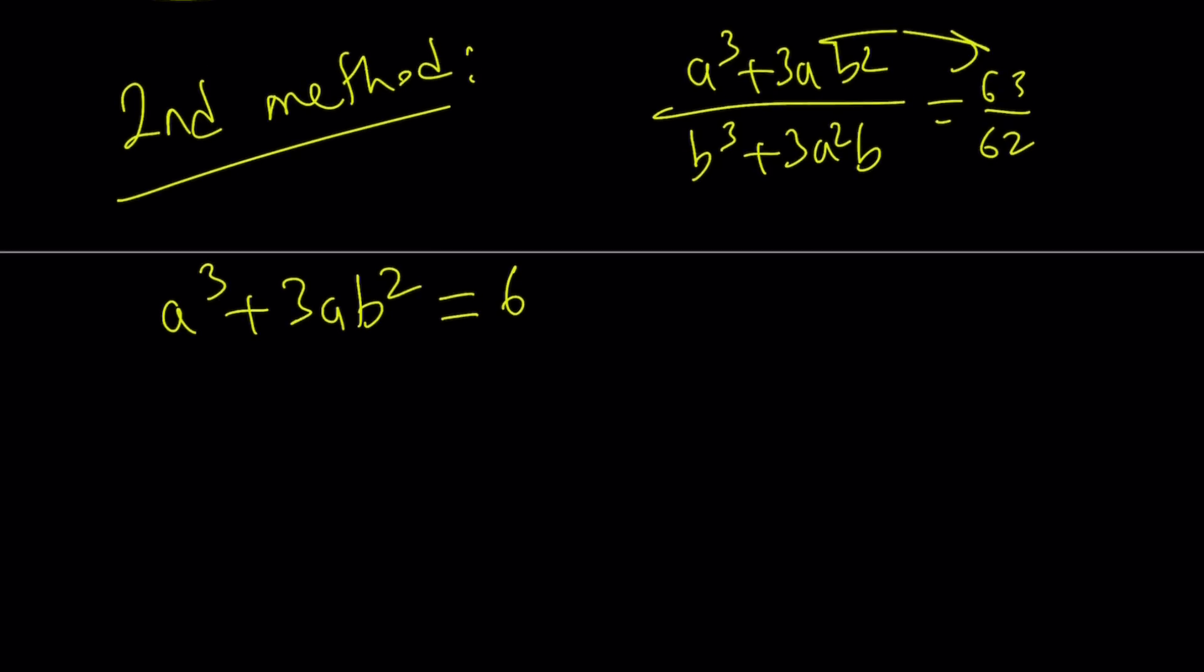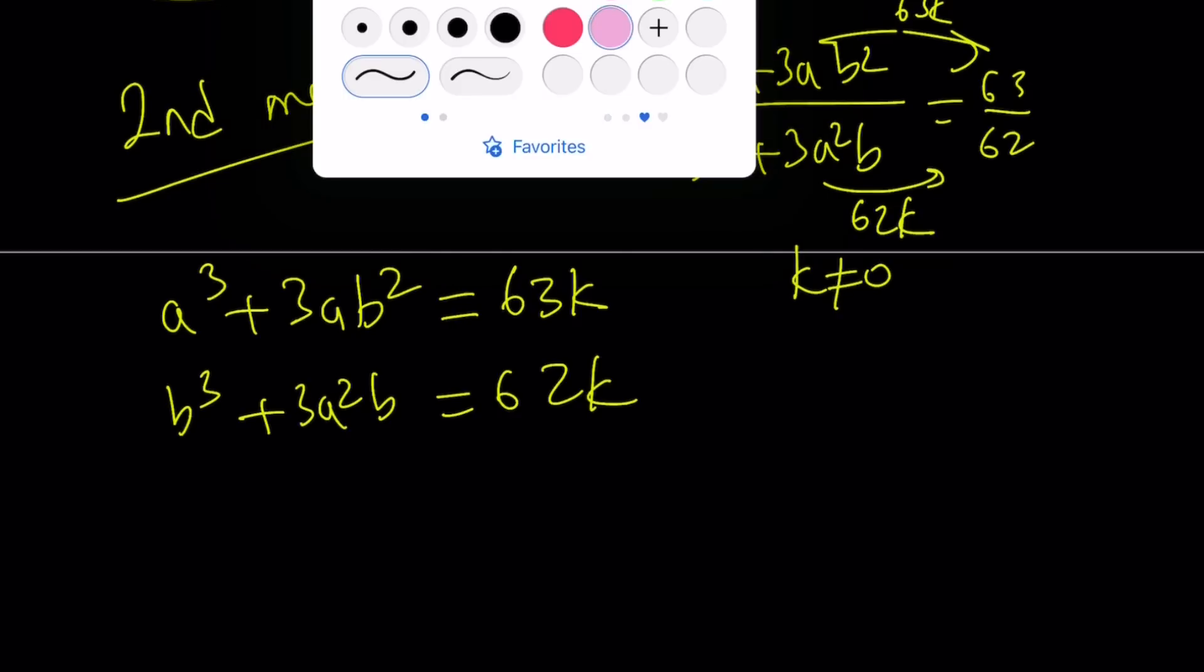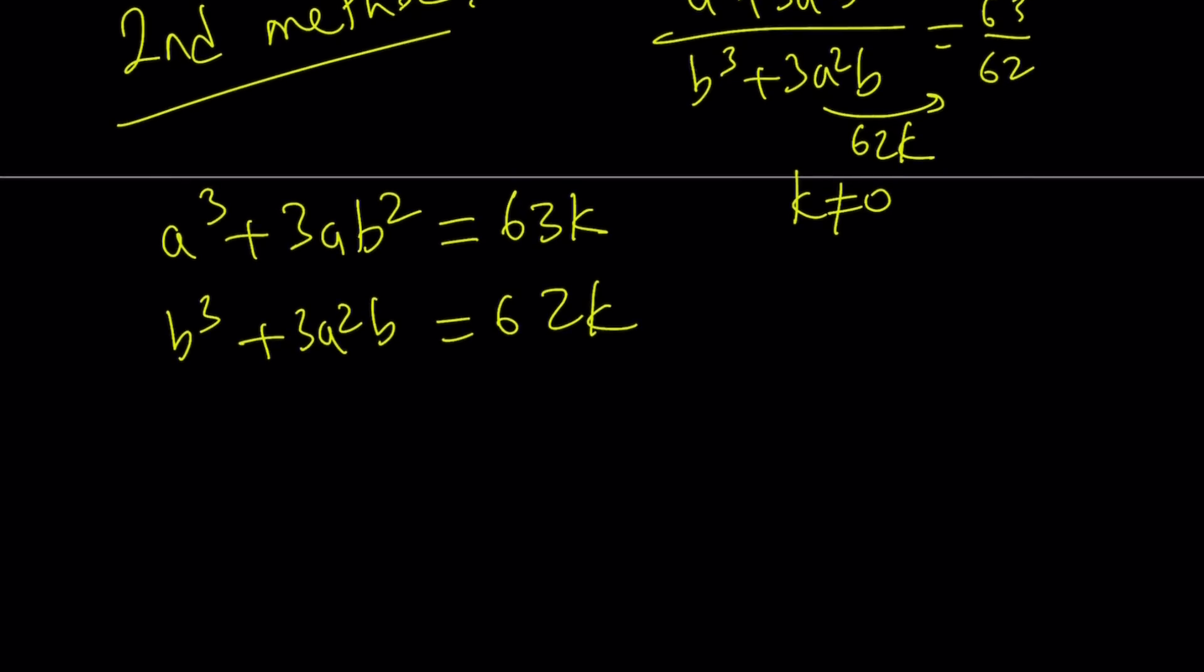Now I can safely say that, hey, let the numerator be 63k and let the denominator be 62k. Why? Because the ratio is always going to be 63 to 62. And obviously in this case, k should not equal 0. Right? So in this case, I'm going to set the numerator equal to 63k and the denominator equal to 62k. At this point, we can just add and subtract. But it's just going to become the same thing. So let's go ahead and do something different. So that is the different method that we're going to use here. Basically involves the following.